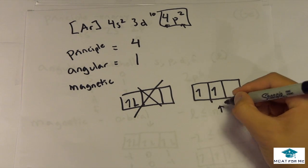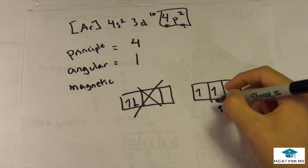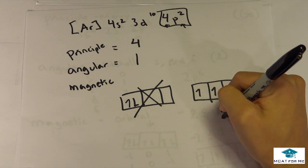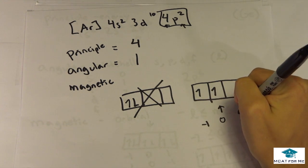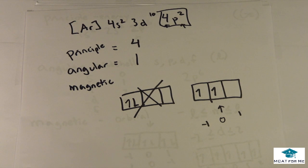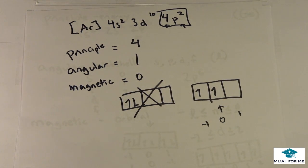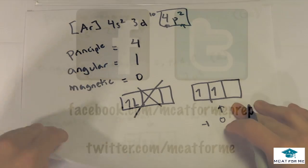So they'll have to work like this. So we wanted the very last electron, the one with the highest energy. So it would have to be this one in the middle. And we know this is negative 1, 0, and 1. So we know the magnetic quantum number would have to be 0. So we know principal is 4, angular is 1, and magnetic is 0.